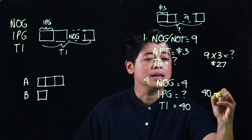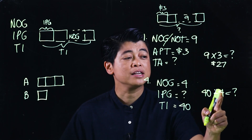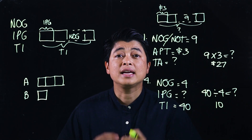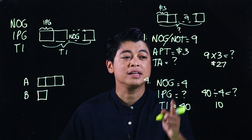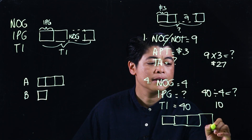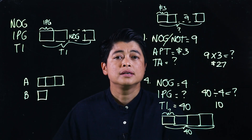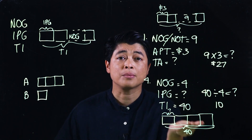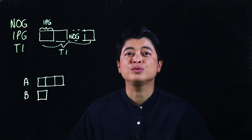Since the total is given and we're finding items per group, this is a division problem. The setup is 40 divided by 4 equals question mark. Counting by fours until we reach 40 gives us 10. If a bar model is required, we draw four groups, mark the question in each group, and write 56 as the total — use that to guide making the bar model.